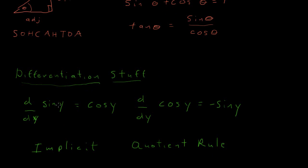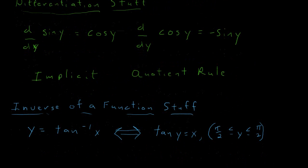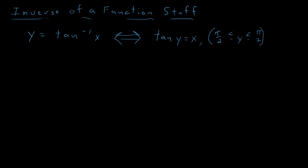For the differentiation prerequisites, we need to know that the derivative of sine is cosine, and the derivative of cosine is minus the sine. We also need to know implicit differentiation and the quotient rule. We need to know what the inverse tangent of x means: it is equivalent to saying that the tangent of y equals x, and y is limited to between negative pi over 2 and pi over 2.